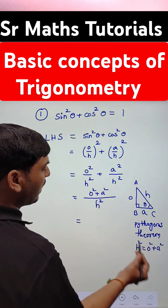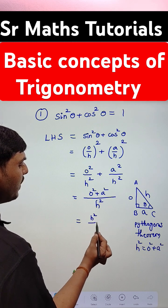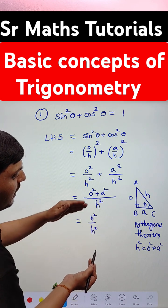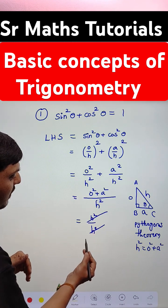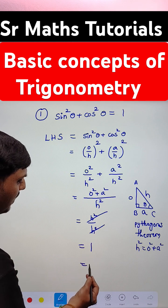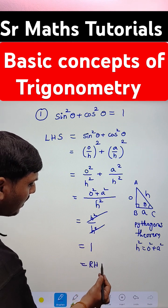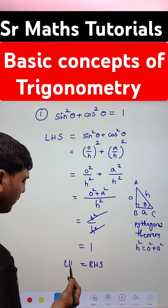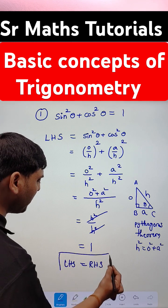So opposite square plus adjacent square equals hypotenuse square. Therefore the numerator becomes hypotenuse square by hypotenuse square. Numerator and denominator both are the same terms, so they cancel. The answer is 1, that is RHS. LHS equals RHS, so the given statement is true.